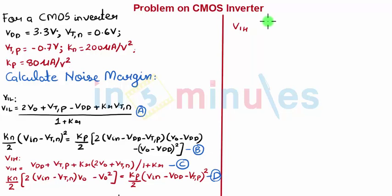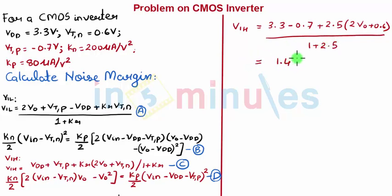So VIH is equal to, let's substitute all the values: 3.3 minus 0.7 plus 2.5 times 2 times Vout plus 0.6, this entire thing upon 1 plus 2.5. Just substituting, we get 1.43 Vout plus 1.17.